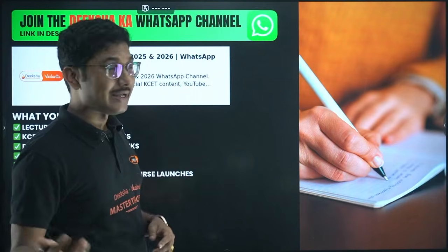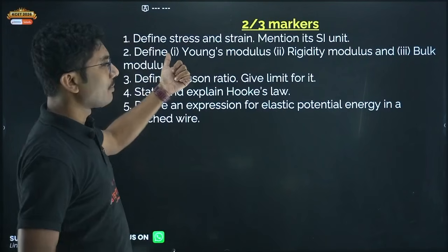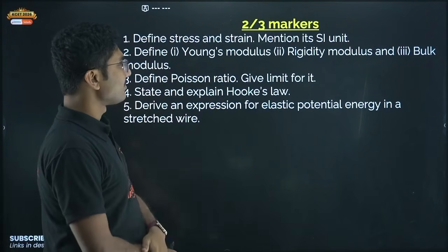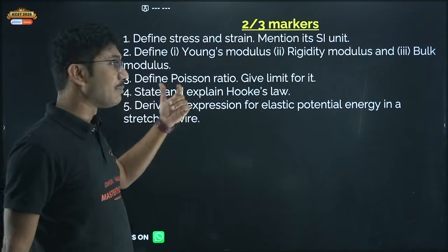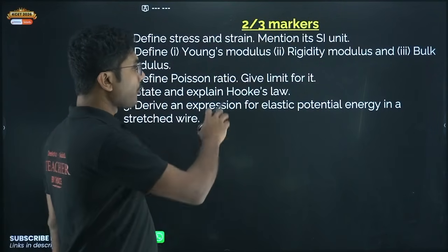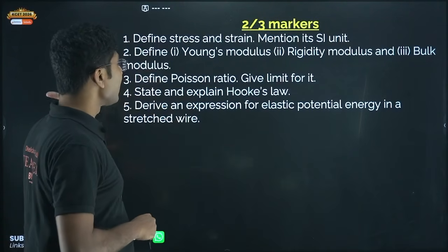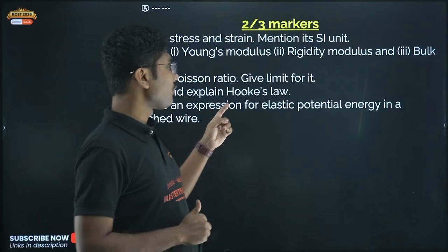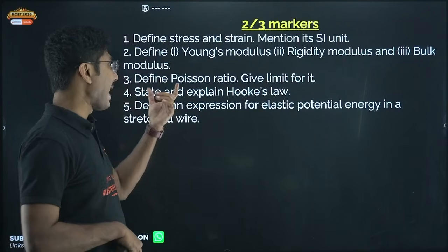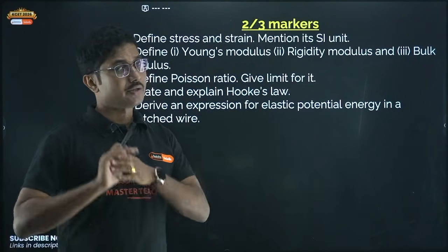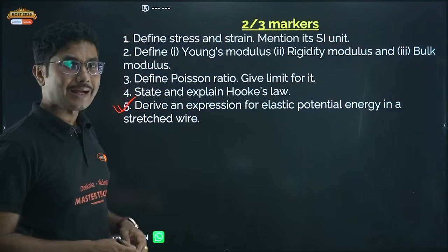The second chapter is Mechanical Properties of Solids. Important questions: define stress and strain and mention their units; define Young's modulus, rigidity modulus, and bulk modulus; define Poisson's ratio and give its limits; state and explain Hooke's law; derive the expression for elastic potential energy in a stretched wire. Hooke's law and the elastic potential energy derivation may be combined into a five marker question.